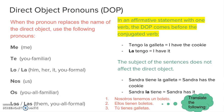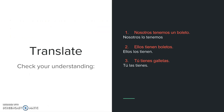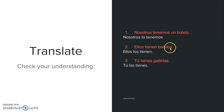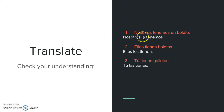Let's look at the answers. Nosotros tenemos un boleto — boleto is singular and masculine — becomes nosotros lo tenemos. Instead of saying un boleto, we say lo. Ellos tienen boletos — boletos is plural — becomes ellos los tienen; los replaces boletos. Tú tienes galletas becomes tú las tienes. Notice that in all of these, the direct object pronoun comes before the verb, and there is only one verb in each simple sentence.